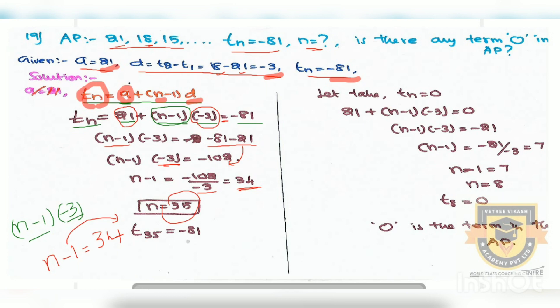So, we will explain that if you have a question — minus 81 is 80 in this AP. Okay friends, we will explain a little bit. If you have a question or a doubt, you can use the comment box or WhatsApp.